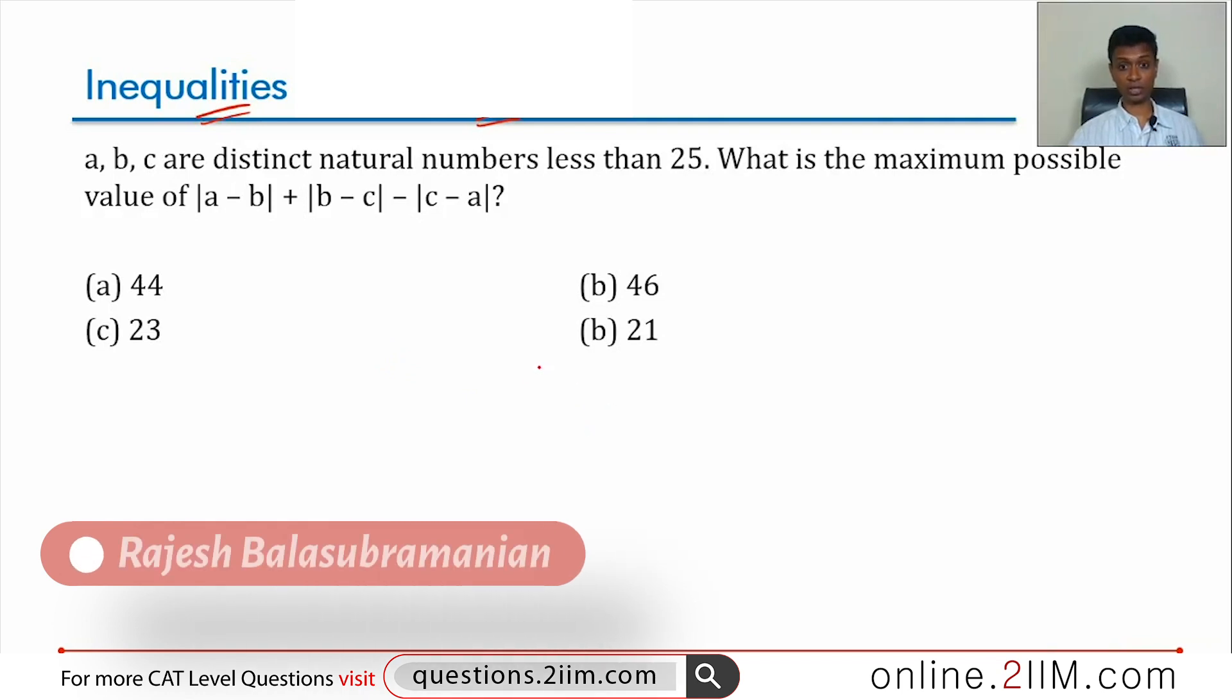A, B, C are distinct natural numbers less than 25. We are looking at numbers 1, 2, 3, 4 all the way till 24.